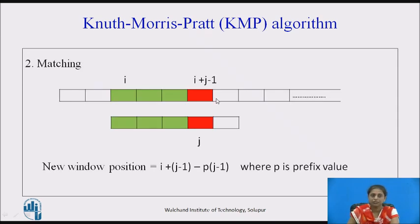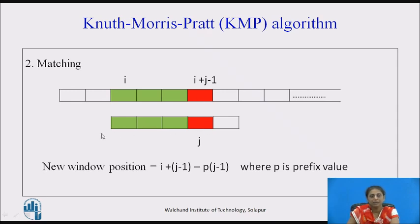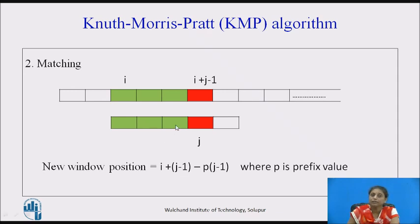In the matching phase, the green colour indicates matched characters. Suppose text pointer is at position I and pattern pointer is at J, where there is a mismatch. The number of matched characters is J−1. We don't shift by all matched characters — we use the prefix value of position J−1 to determine the shift. The formula I + (J−1) − prefix_value(J−1) gives the new window starting position.